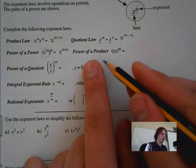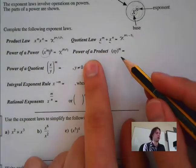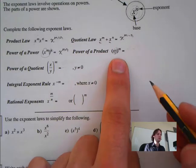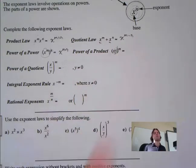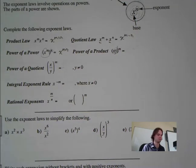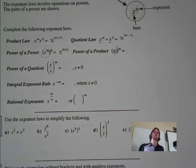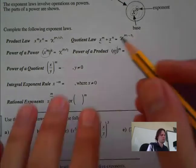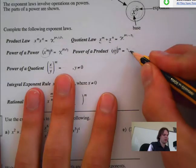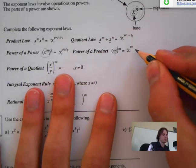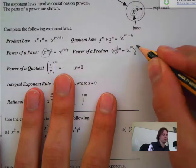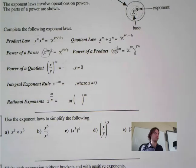Next one is power of a product. We have a product inside brackets and an exponent n on the outside. Normally if there's a bracket, we use the distributive property. So we get x to the n times y to the n — it's kind of distributable.